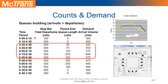In the first 15-minute analysis period, we see 300 vehicles departing from the stop bar and no vehicles queued at the end of that period. That means there are no unserved vehicles — all the demand that came in got served. That's why we say our demand is 300 as well.